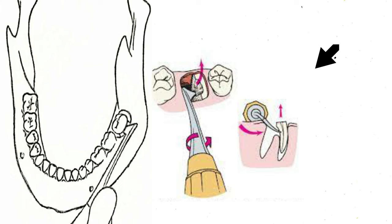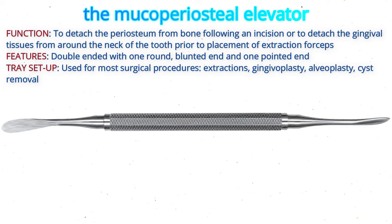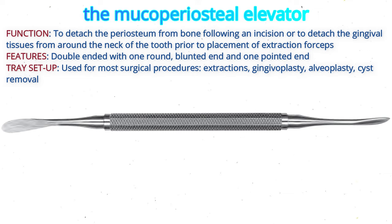The last one is the mucoperiosteal elevator. It is used to detach the periosteum from bone following an incision, or to detach the gingival tissues from around the neck of the tooth prior to placement of extraction forceps. It is double-ended, with one round blunted end and one pointed end.